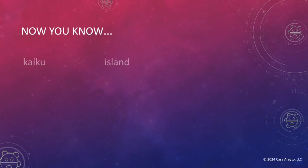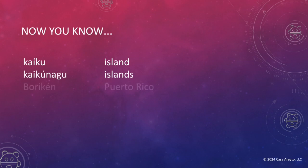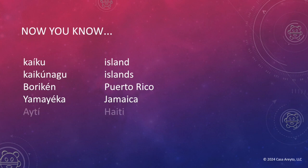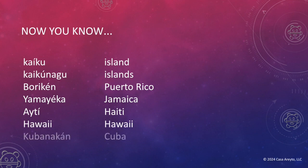Kaiku — island. Kaikunagu — islands. Boriken — Puerto Rico. Yamaica — Jamaica. Haiti — Haiti. Hawaii. Kubanacan — Cuba.